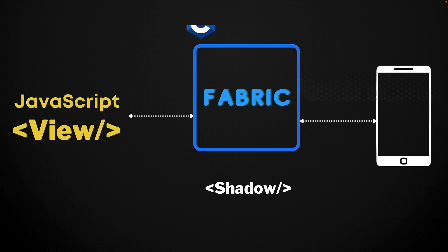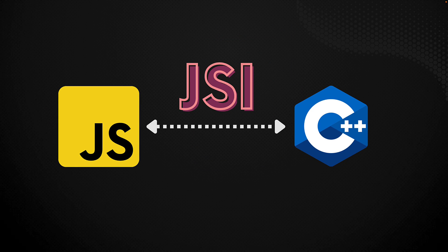To enable the communication between our JavaScript code and the Fabric code written in C++, React Native has this thing called the JavaScript Interface, or JSI. This interface allows React Native to asynchronously, or even synchronously for critical things like scroll events, communicate between our JavaScript code and the native components.